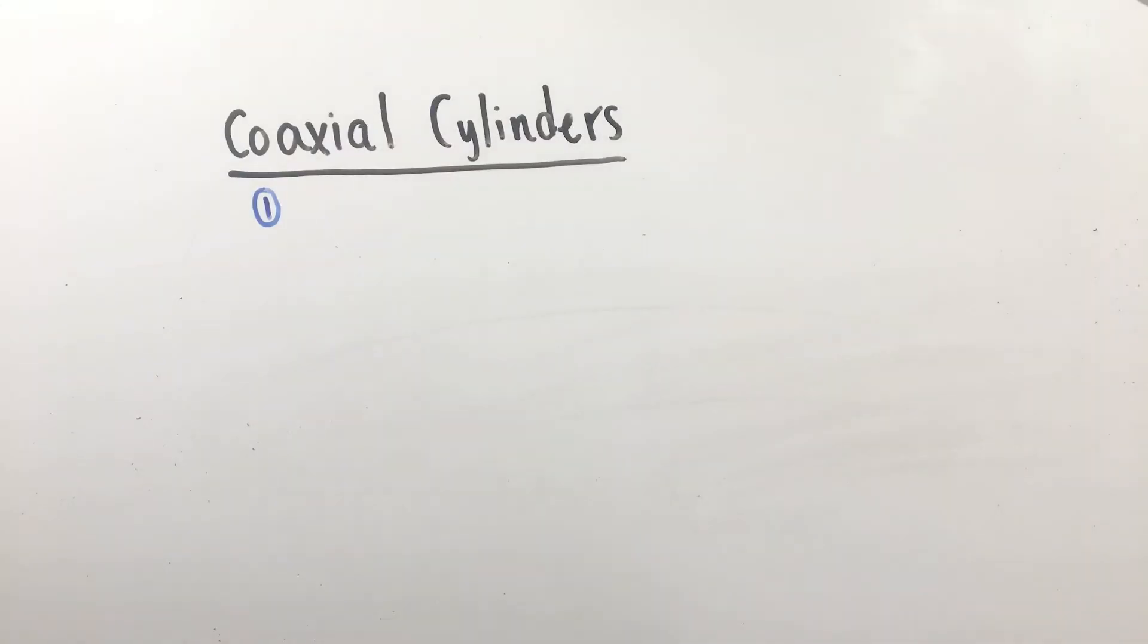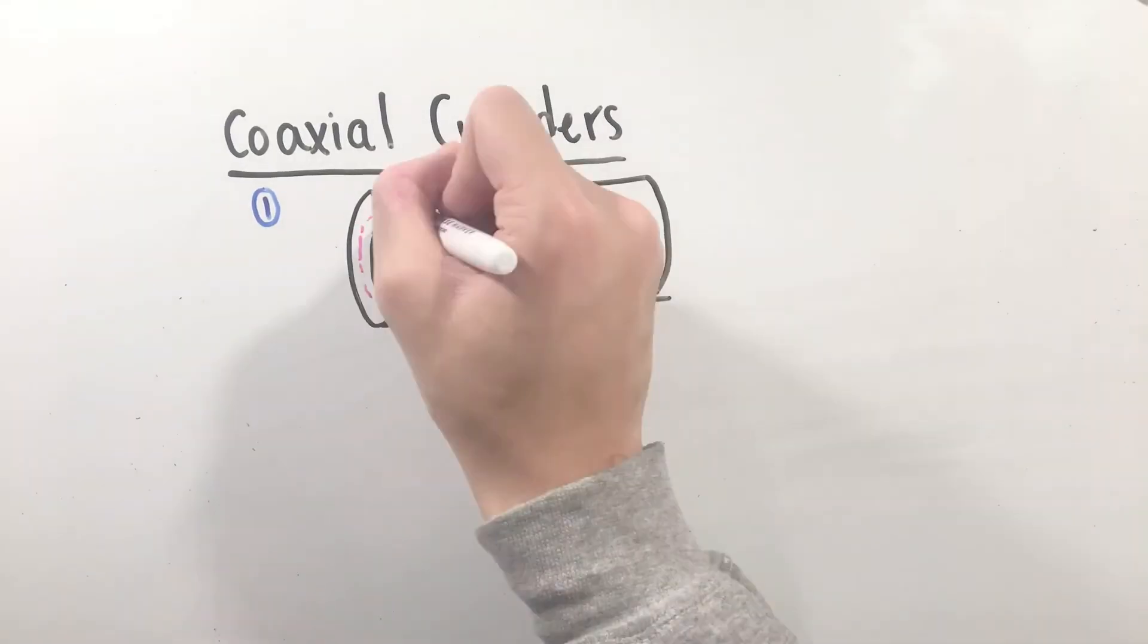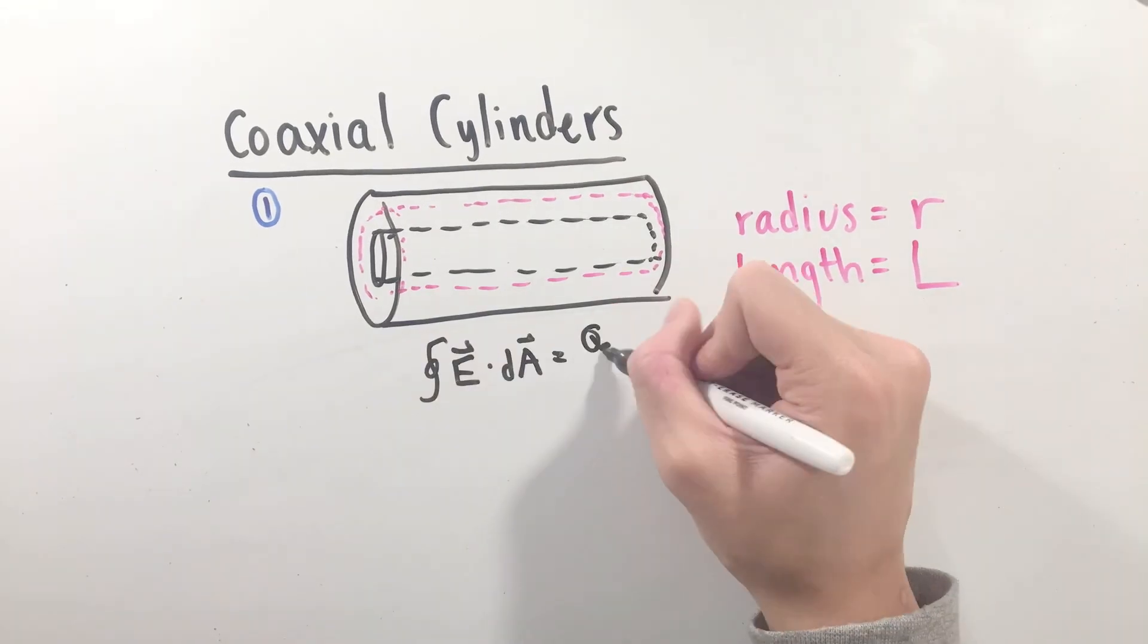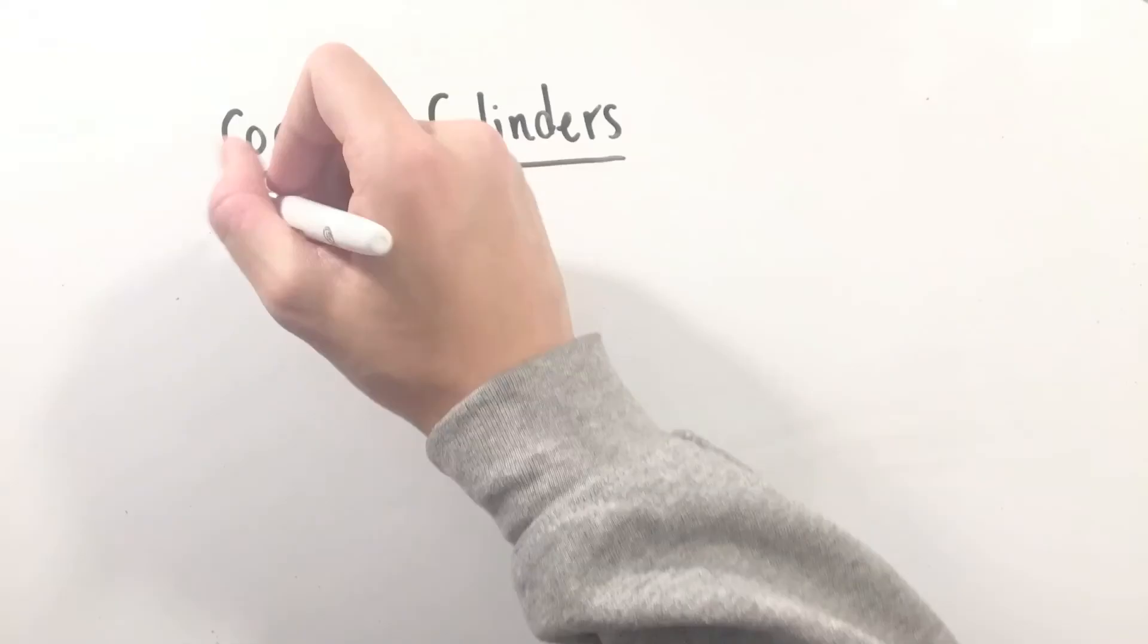Finding the electric field, like before, involves the use of Gauss's law. Choosing our Gaussian surface as some cylinder with radius R and length L, we can solve for the electric field in between these two cylindrical plates.